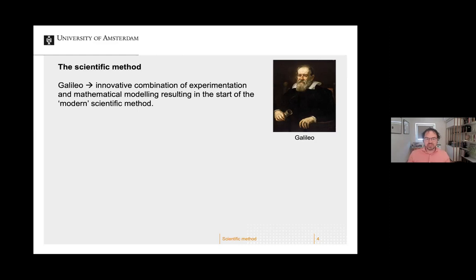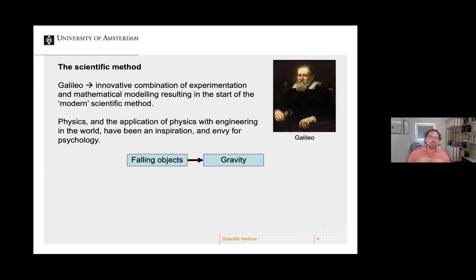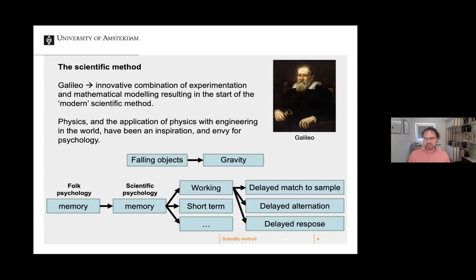Galileo was measuring the speed of falling objects and trying to model that. In physics in general, the application of physics with engineering in the world has been an inspiration and source of envy for psychology. Physicists kind of have it easy — with Galileo's falling objects and Einstein, it's kind of clear what needs to be explained and what was observed.